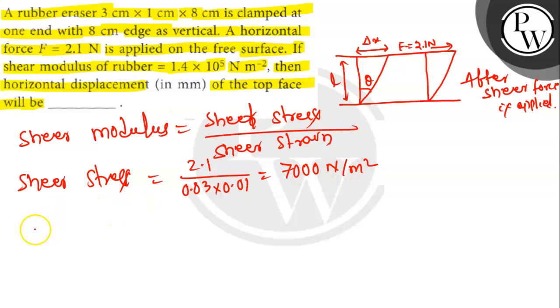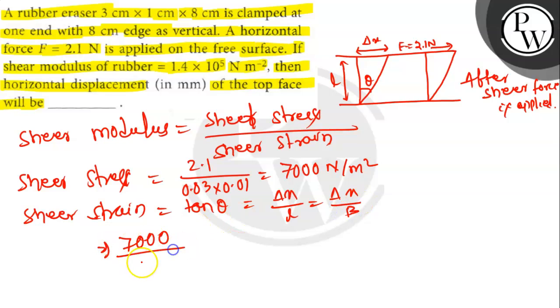Shear strain is equal to tan theta, that will be del x by L. That is equal to del x by B. So it will be 7000 N per meter square. So that will be 1.4 × 10 to the power 5.